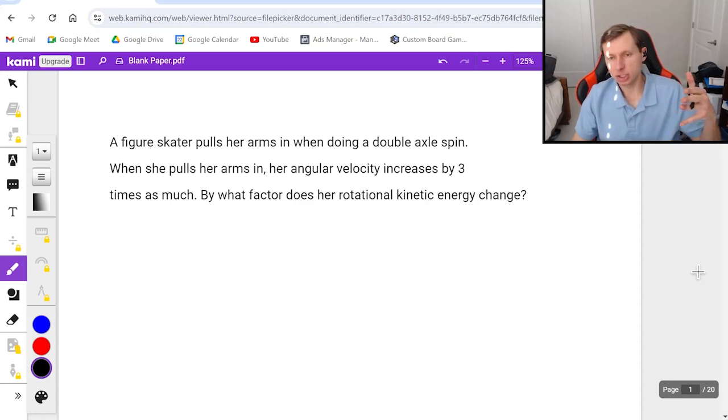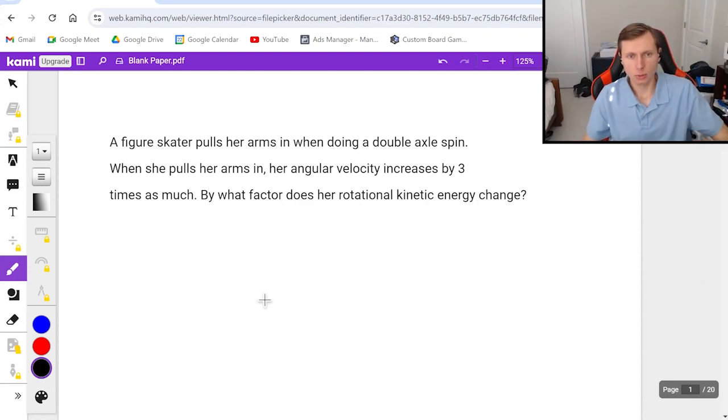So it sounds like we're trying to find change in kinetic energy which means I'm going to be using the equation rotational kinetic energy is equal to one half times I times omega squared. I do want to find her initial and her final so I can find the change.